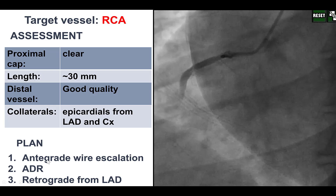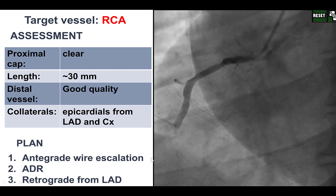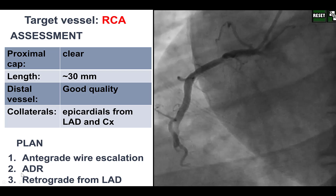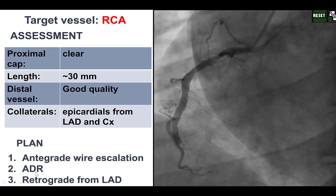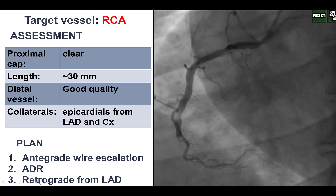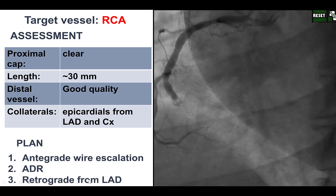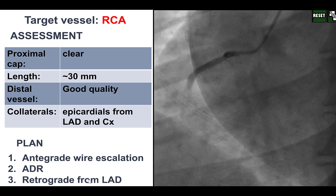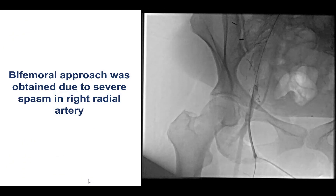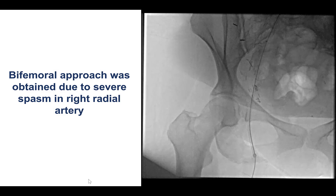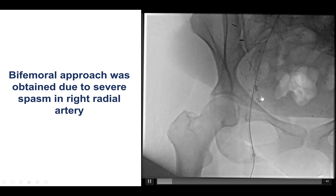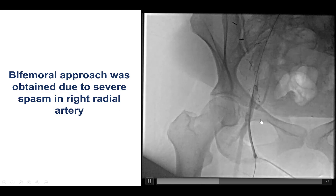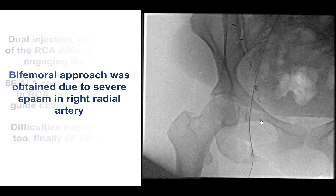As a result, the plan here was to start with antegrade wire escalation, then switch to antegrade dissection re-entry, and the third option would be retrograde via surfing septal collaterals from the LAD. We were planning to obtain femoral-radial access; however, there was significant spasm in the right radial artery, and bilateral femoral access was used.